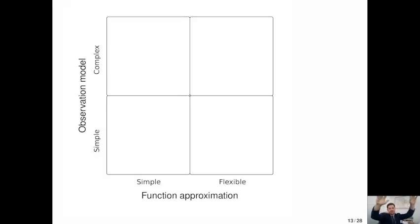And we can start to think about like where do models fall in terms of their flexibility and function approximation on the x-axis here and the complexity of the observation model on the y-axis here. So in the lower left-hand quadrant, you might imagine linear regression and maybe generalized additive models as like relatively simple function approximators. Super simple observation models because you can observe the thing that you're trying to predict.